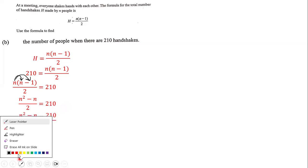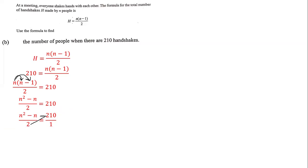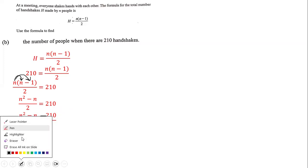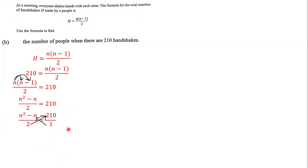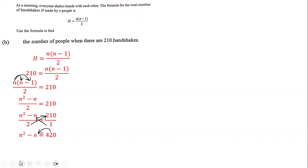We write 210 as 210/1 and cross-multiply: 2 times 210 and 1 times (n² - n). 2 times 210 is 420, and 1 times (n² - n) is n² - n. Moving 420 across the equals sign gives us n² - n - 420 = 0.